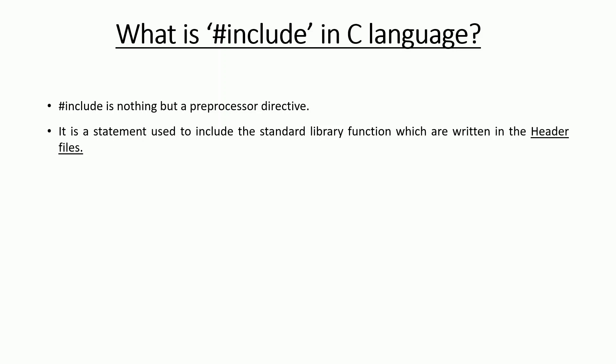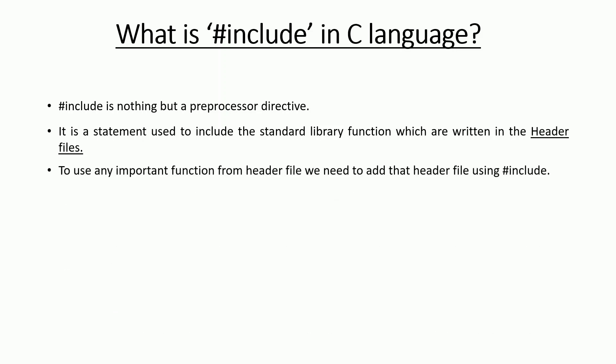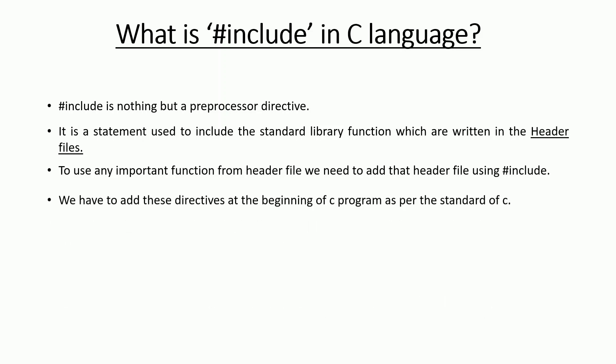To use any important function from a header file, we need to add that header file using hash include. We have to add these directives at the beginning of the C program. As per the standard of C, there are certain protocols defined for C compilers, so that's why we need to add this hash include statement at the beginning of the C program.